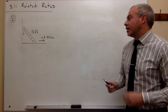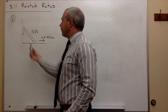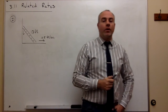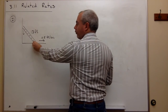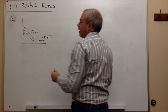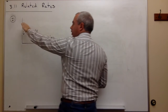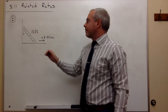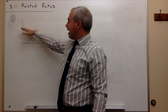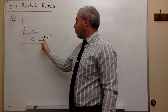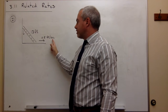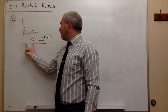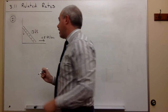In problem number 21 we have a ladder problem. We've got a 13-foot ladder leaning against a vertical wall. We're going to start pulling the foot of this ladder away from the wall, and as we do, the top of the ladder is going to start sliding down the wall. We're being asked: how fast is the ladder sliding down the wall if we're moving the foot away at a rate of 0.5 feet per second, specifically when the foot is five feet away from the wall?